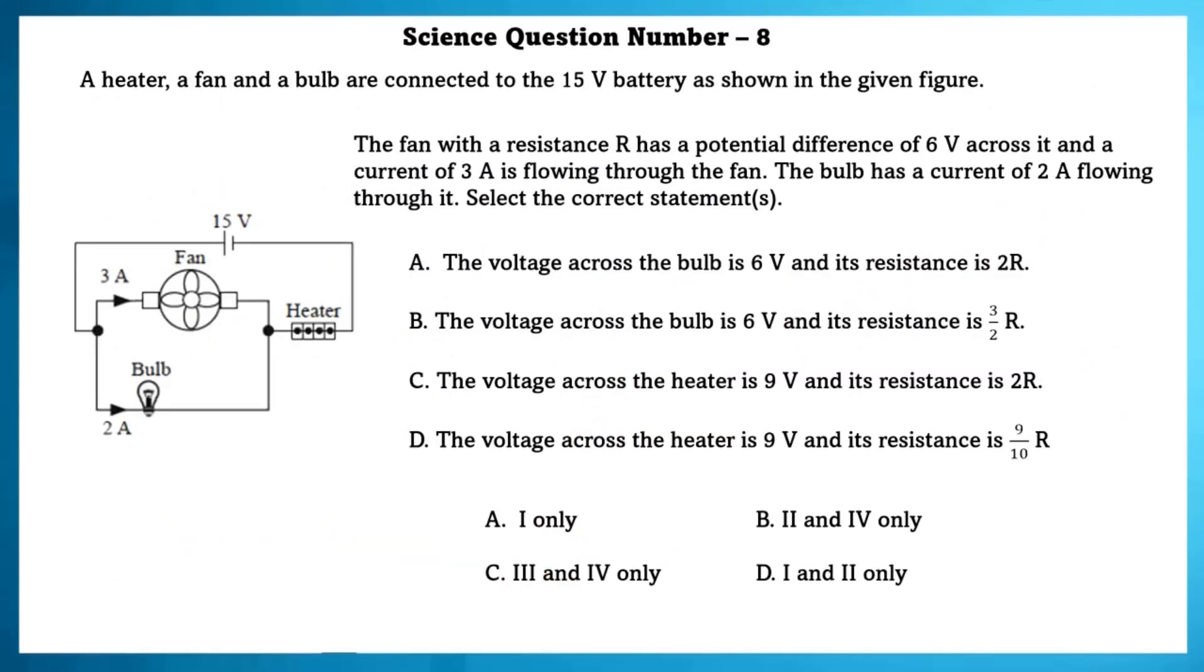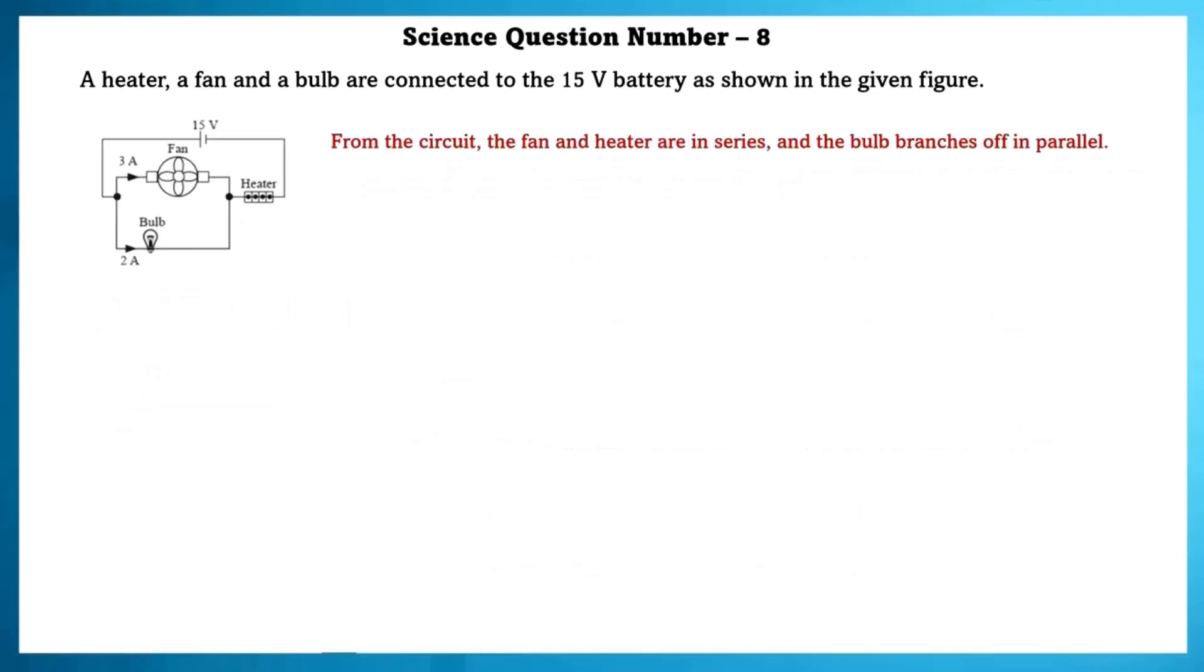Science Question Number 8. A heater, a fan and a bulb are connected to 15-volt battery as shown in the given figure. The fan with a resistor R has a potential difference of 6 volts across it, and a current of 3A is flowing through the fan. The bulb has current of 2A flowing through it. Select the correct statement. From the circuit, the fan and heater are in series and the bulb branches off in parallel. Now, let us calculate the fan resistance, that is R.